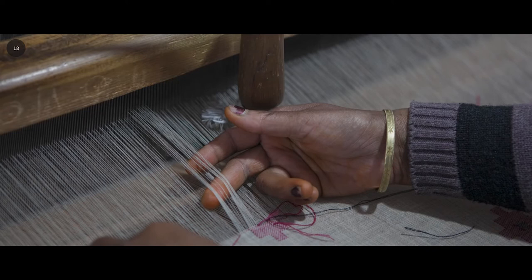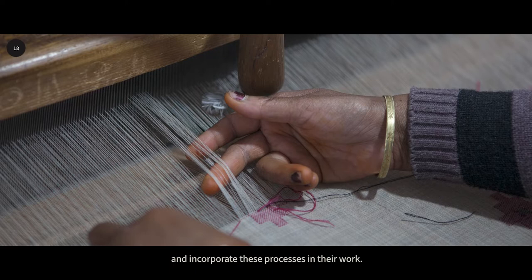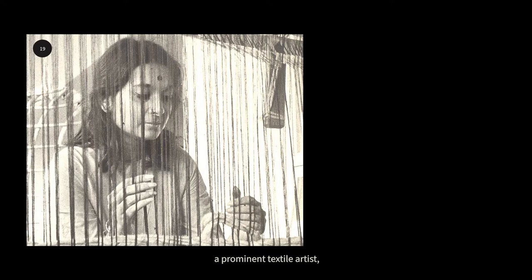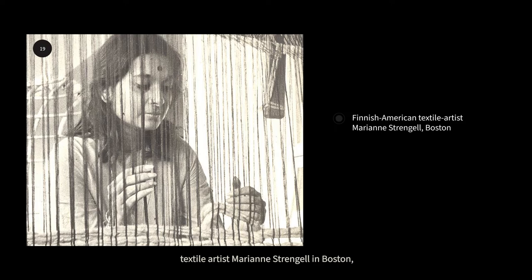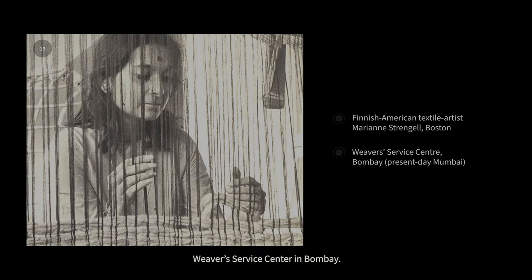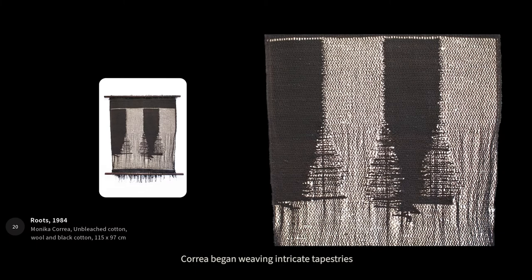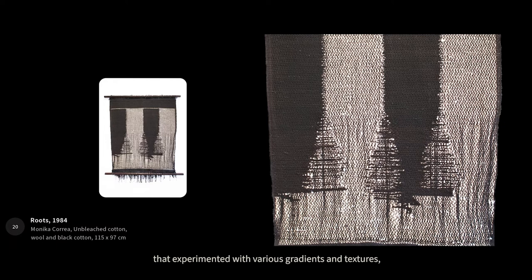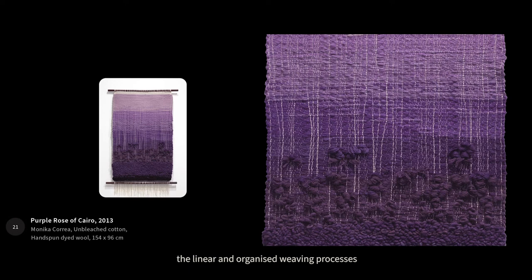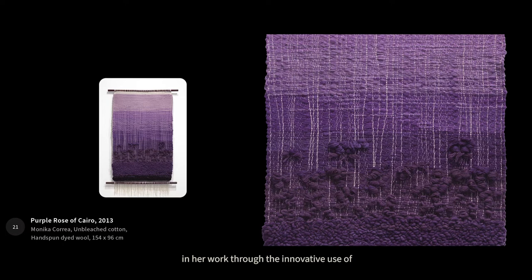A number of visual artists have also trained in methods of textile production and incorporate these processes in their work. Monica Correa, a prominent textile artist, first learned how to operate the loom under the renowned Finnish-American textile artist Marianne Strangel in Boston, and continued her training at the Weaver Service Center in Bombay. Through the technical skills she developed in the 1960s, Correa began weaving intricate tapestries that experimented with various gradients and textures, representing motifs inspired by nature. She routinely disturbs the linear and organized weaving processes and incorporates three-dimensional effects in her work through the innovative use of rough and textured wool and cotton.